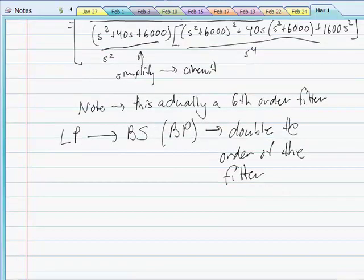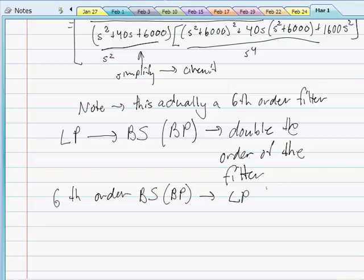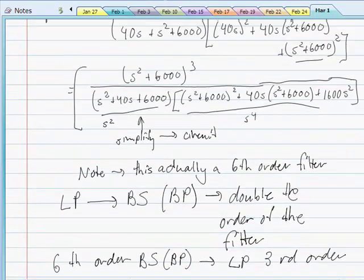So if you want to end up with a sixth order band stop or band pass filter, you want to look up a low pass third order. If you want a fourth order, you look up the low pass second order, and so on. So that is just one thing I want you to note.